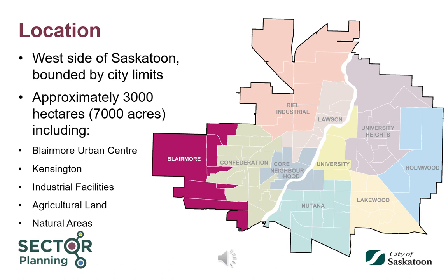The Sector also includes the currently under-construction Kensington neighbourhood, which is primarily made up of residential development, along with some commercial properties. The Sector includes several existing industrial facilities, including the CN Chapel Yards. The majority of the Sector is undeveloped, primarily operating as agricultural land. There are also natural areas in the Sector, including two afforestation areas and several wetland complexes.